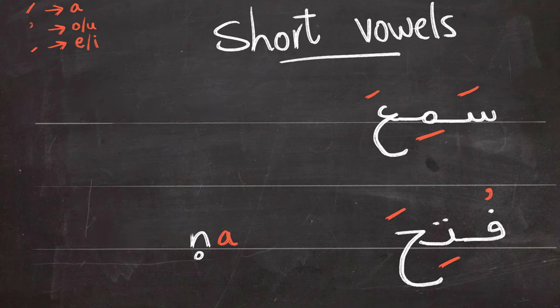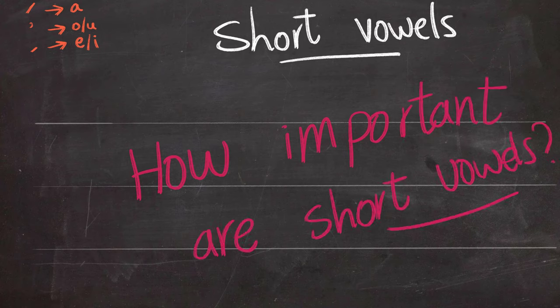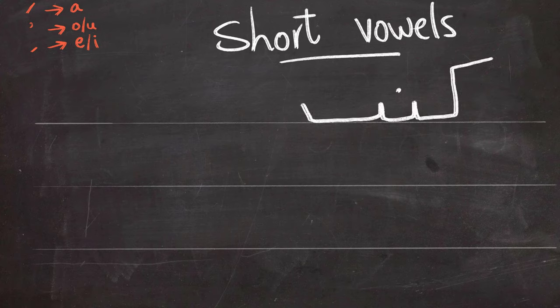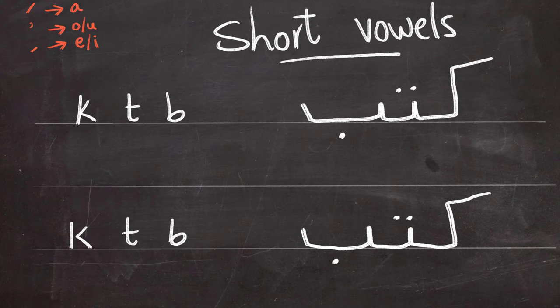So you might be wondering now are short vowels really that important? Actually they are extremely important. A word like the one we see on the screen right now. The word is made up of three consonant sounds and we don't know what the vowels are yet. So what you should be seeing right now are two identical words. However by adding different vowels you could basically change the time and the meaning of the word completely.